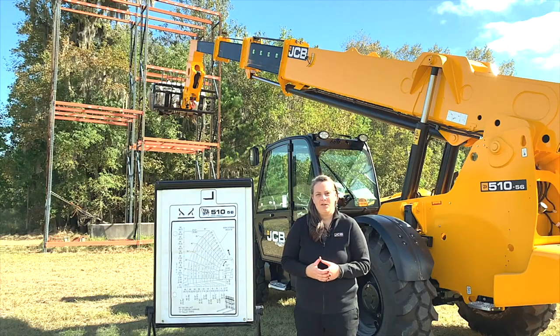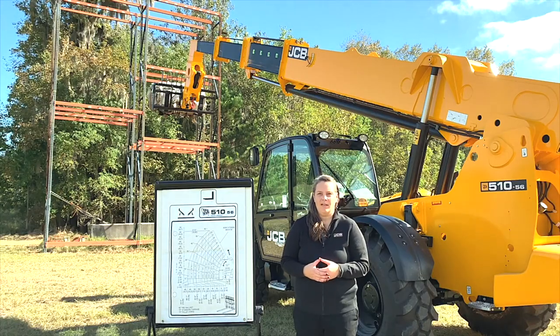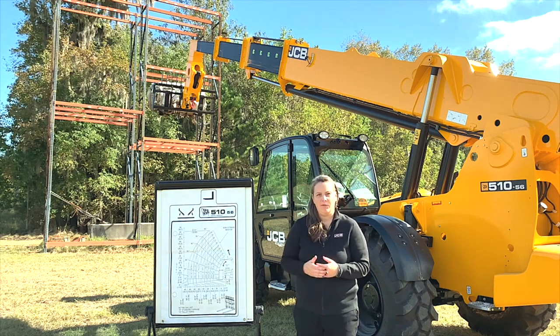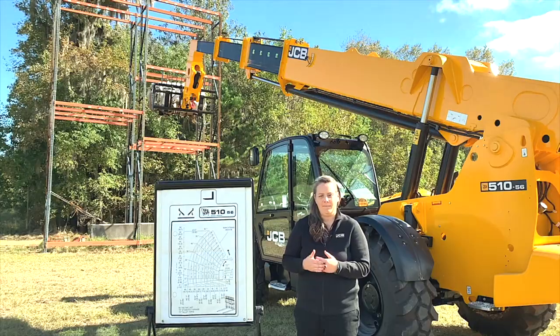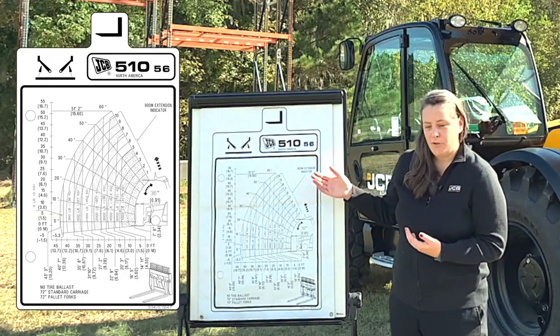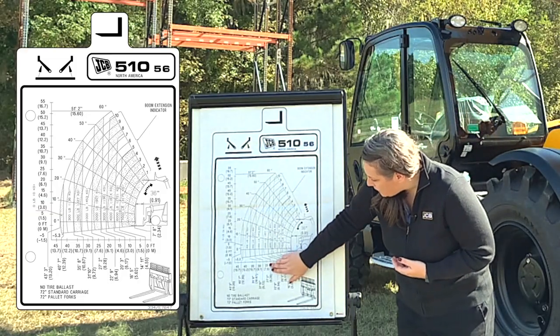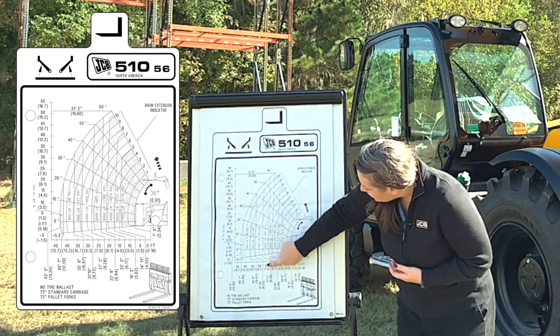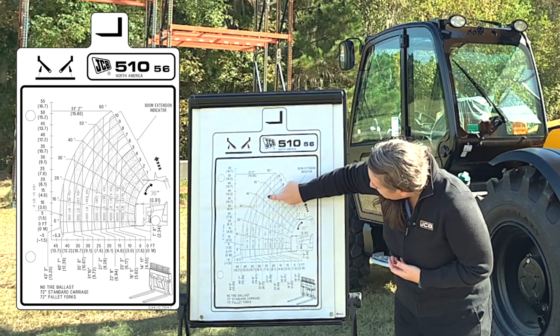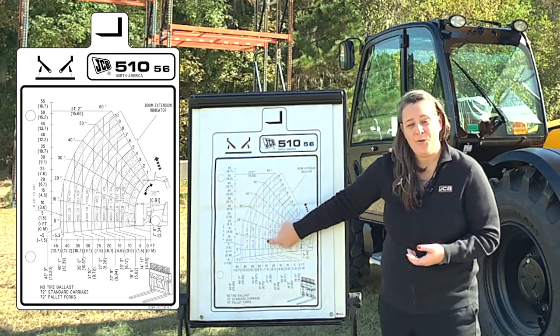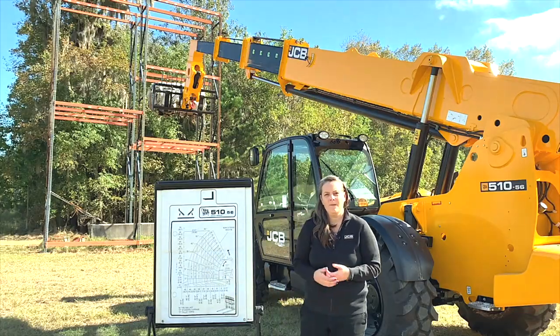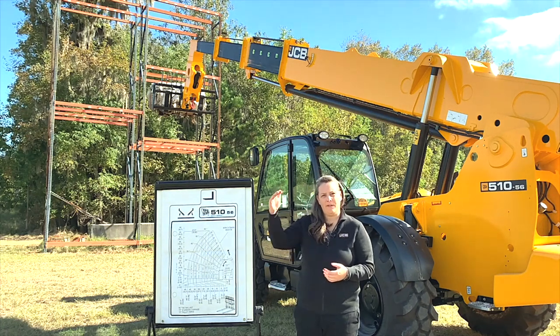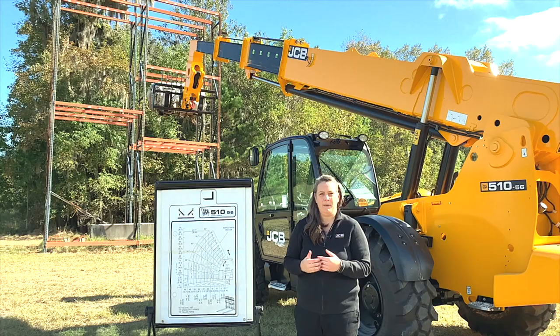Say you have an operator who needs to place a load 35 feet high on scaffolding but can't get any closer than 25 feet from the scaffolding. What we're going to do for the load chart is go over 25 feet and come up 35 feet. As you meet those two points in the middle, you're going to be at 2,000 pounds. So we know that the operator can place a load of 2,000 pounds up 35 feet while staying 25 feet back from the scaffolding.